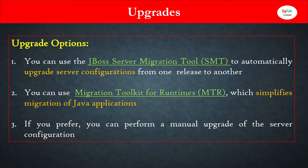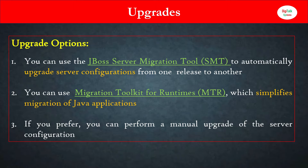When we talk about upgrading JBoss, there are two major things to take care of: your infrastructure-related configurations, meaning your server configurations, and your applications deployed on JBoss. For server configuration changes, you can use the JBoss Server Migration Tool, called SMT. This tool is used to upgrade server configurations from the previous version to the new version.